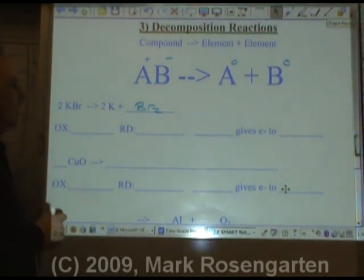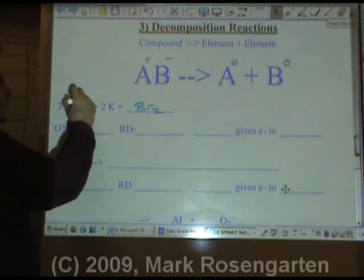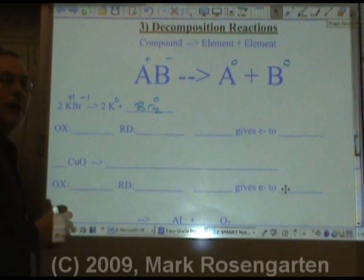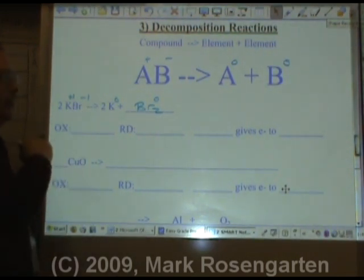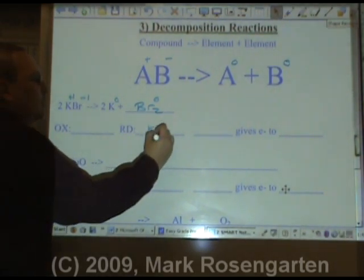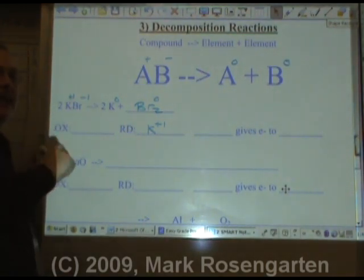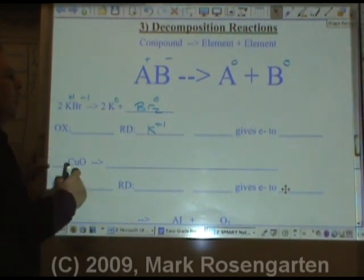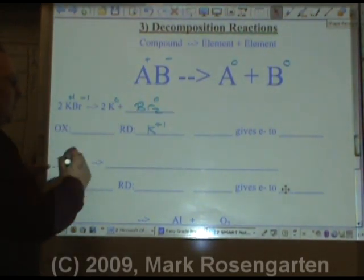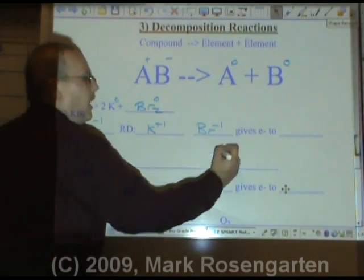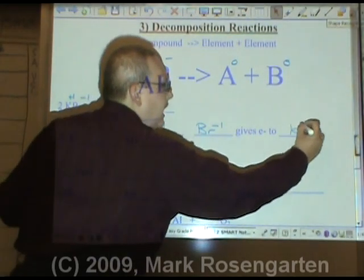K is plus one. Br is minus one. These guys are both zero because they're all by themselves. If they were charged, they'd be in a compound. K goes from plus one down to zero. That means it picked up a negative electron. K plus one was reduced down to zero by gaining back an electron. The bromide ion goes from negative one to zero by losing a valence electron. Therefore, the Br minus one gives up electrons to K plus one.